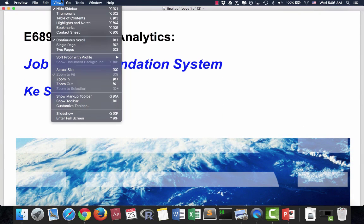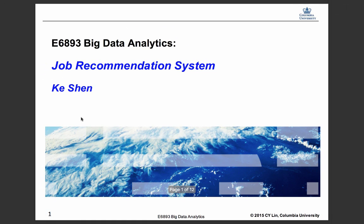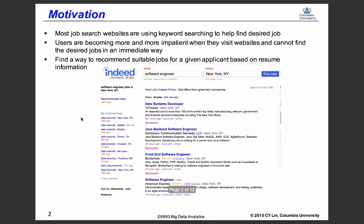Hey guys, I'm Kishen. Today I'm going to talk about my project for a job recommendation system. People are looking for jobs using websites like Indeed, Glassdoor, and so on. Those websites basically use keywords to help people find jobs. For example, if we search for software engineer in New York City, Indeed returns a long list of jobs, but it's not very efficient because you need to click each job to see if it's a good fit.